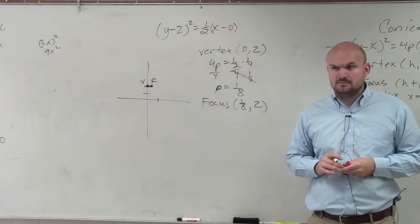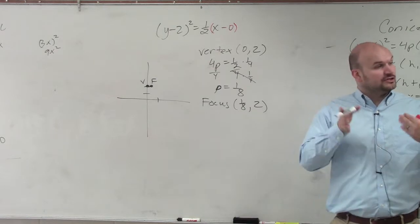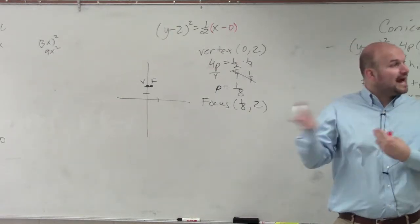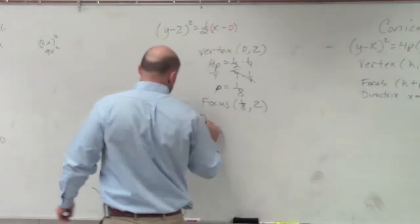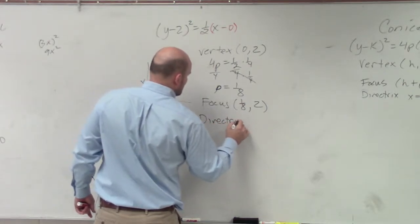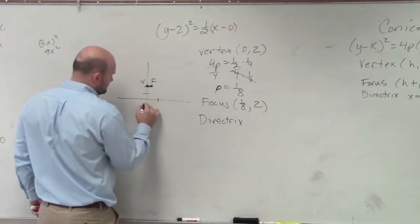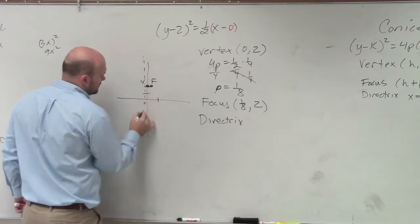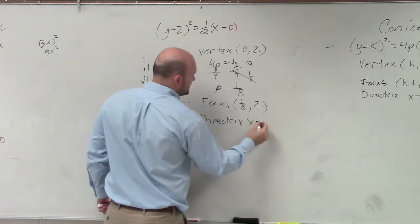And therefore, the directrix is going to be 1/8 in the opposite direction, which is a vertical line. That's going to be x equals negative 1/8.